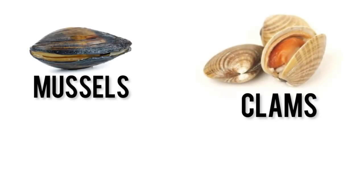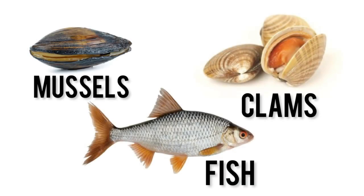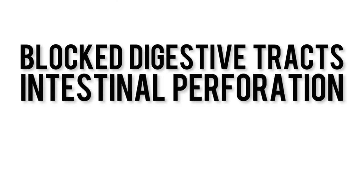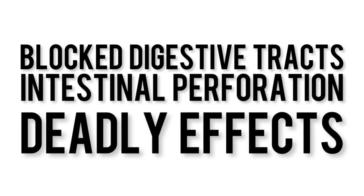In mussels, clams, and fish, microplastic exposure has been shown in various studies to lead to a stress response in gills and digestive gland cells that has the potential to cause damage to DNA and the nervous system. If these things are negatively influenced, the overall functionality of the organism would be severely affected. A high amount of microplastics in these organisms could also lead to their digestive tracts becoming blocked or cause intestinal perforation, which can have deadly effects.